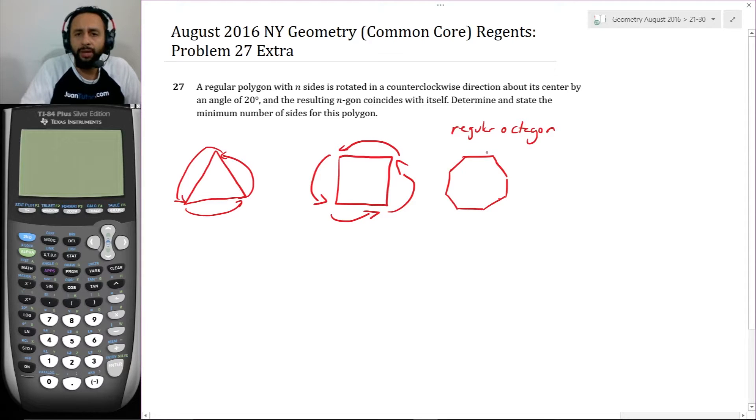And so in general, we see a pattern. Each polygon, the minimum, the number of degrees that it can be rotated so that it coincides with itself is exactly 360 divided by the number of sides. So as a result, if it happens to be that 20 is a factor of 360,